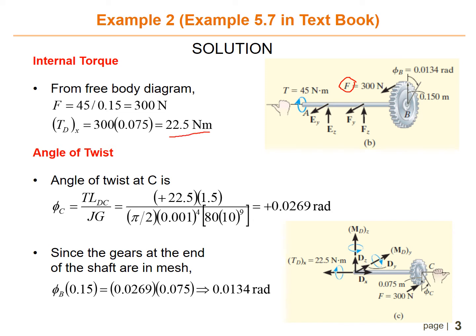You can get torque at D is 22.5 Newton meter. Next, what you need to do is find the angle of twist using this formula. Theta C equals TL_DC divided by JG.